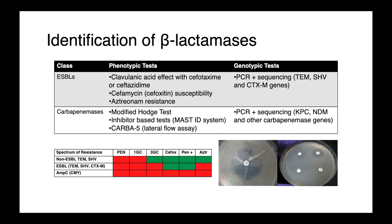We also have inhibitor-based tests — the MAST-ID system, where we have a carbapenem along with various inhibitors. And more recently, we've had the development of lateral flow assays like the CARBA5. All of these phenotypic assays can then be confirmed with genotypic tests such as PCR and sequencing, or increasingly just whole genome sequencing of the isolate.